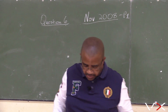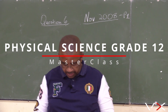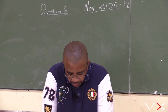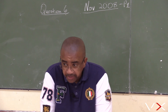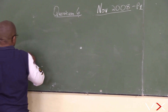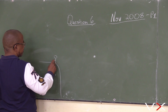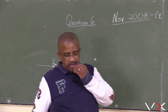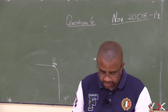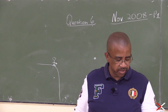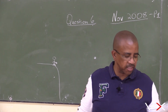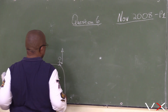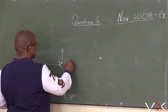November 2008, Paper 1, Question number 6. A boy stands at the edge of a high cliff. He throws a stone vertically upwards with an initial velocity of 10 meters per second, so vi is 10 meters per second.